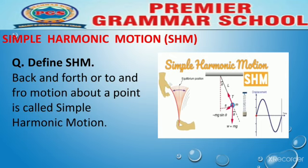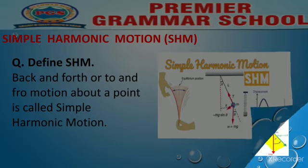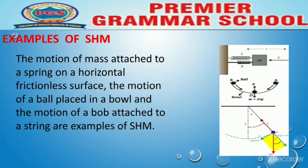اسی motion کو ہم simple pendulum میں بھی discuss کرتے ہیں۔ Waves کی motion بھی ایسی ہی ہوتی ہے جس میں وہ ایک بار اوپر جاتی ہے پھر ایک بار نیچے، اور پھر وہی point دوبارہ repeat ہوتا رہتا ہے۔ Spring کی motion میں بھی اگر spring کو wall کے ساتھ باندھ دیں تو اس کی forward اور backward motion کو بھی simple harmonic motion کا نام دیتے ہیں۔